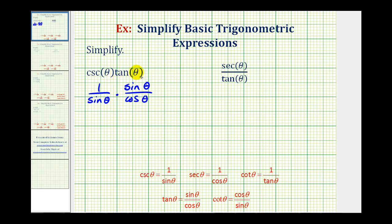Now that everything is in terms of sine and cosine, we can see we have a factor of sine theta over sine theta, which simplifies to one. So this simplifies to one over cosine theta, but one over cosine theta is equal to secant theta.